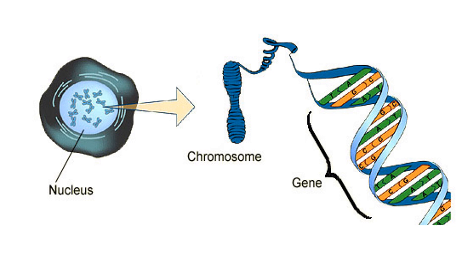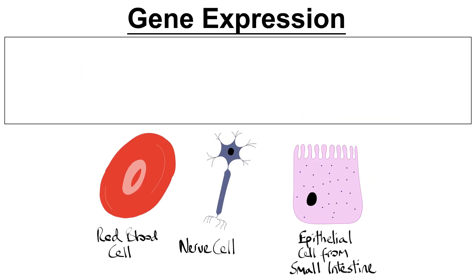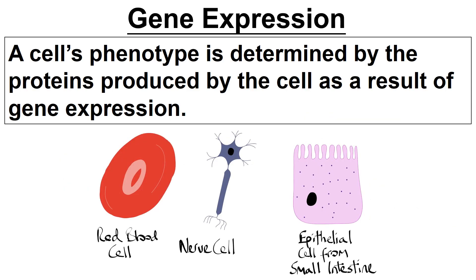Here's your nucleus. Within the nucleus, depending on what kind of living thing you are, you've got a certain number of chromosomes. Within the chromosome, you have various different sections — a lot of it doesn't actually do anything, it's from mutated viruses from the past and things like that. However, you do have sections which are genes, and genes are the sections which code for protein. Just think of a gene as a section of a chromosome, a sequence of bases. A cell's phenotype is determined by the proteins produced by the cell as a result of gene expression.